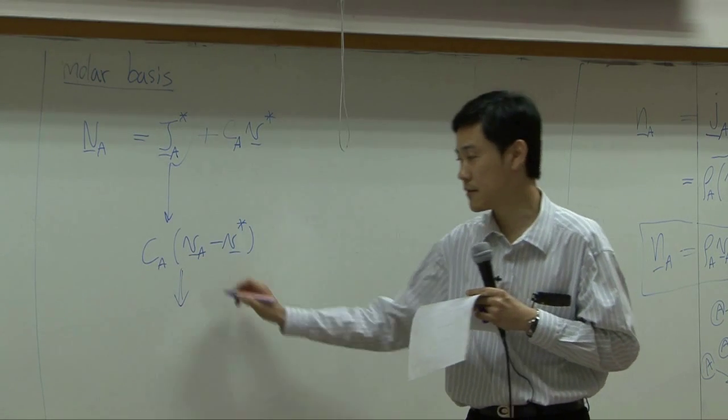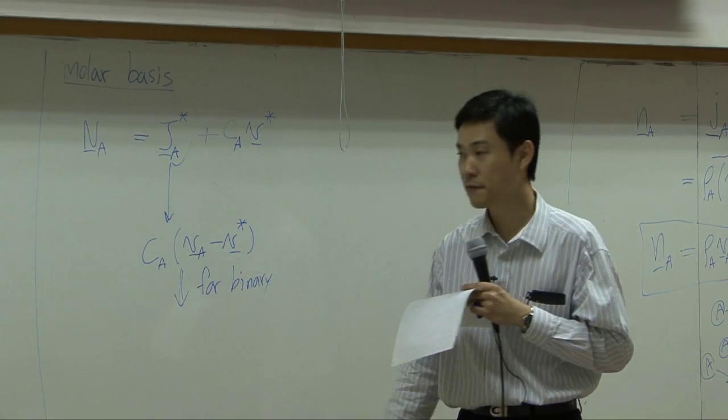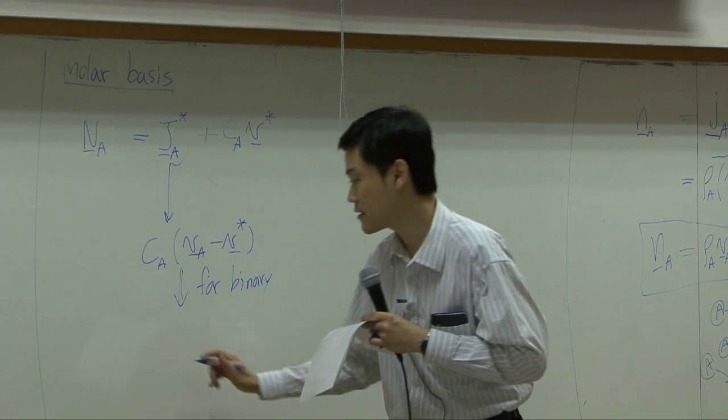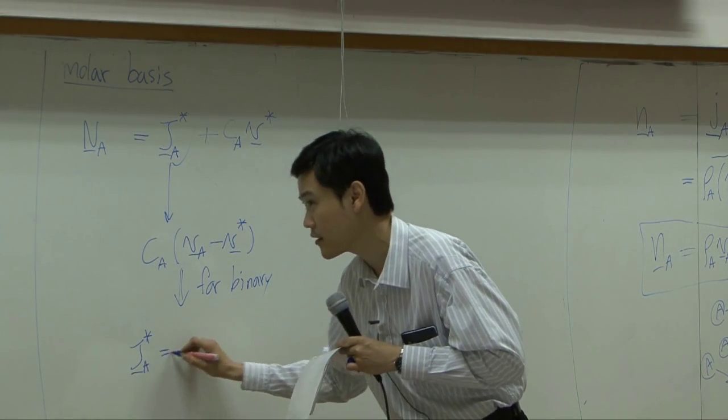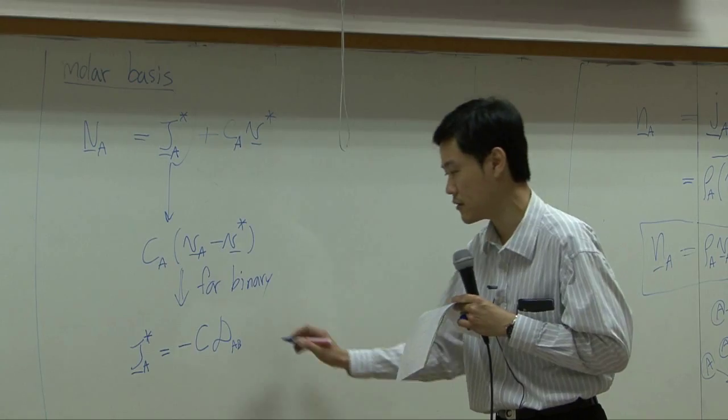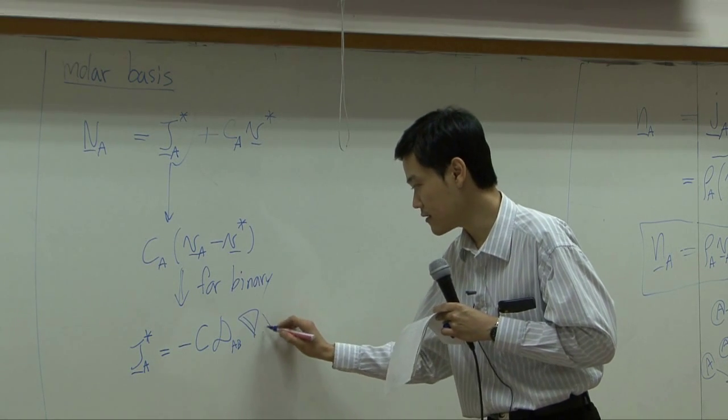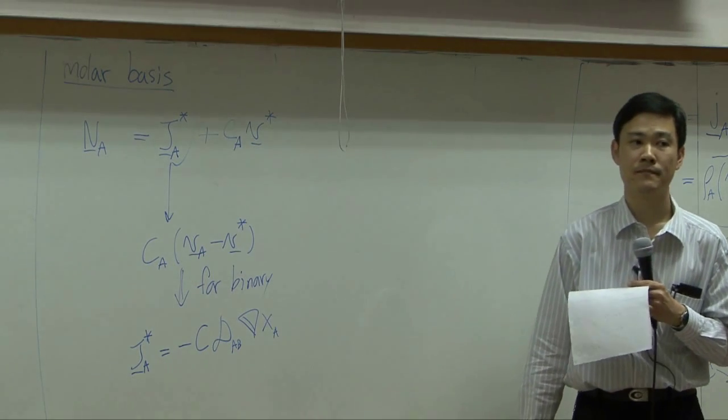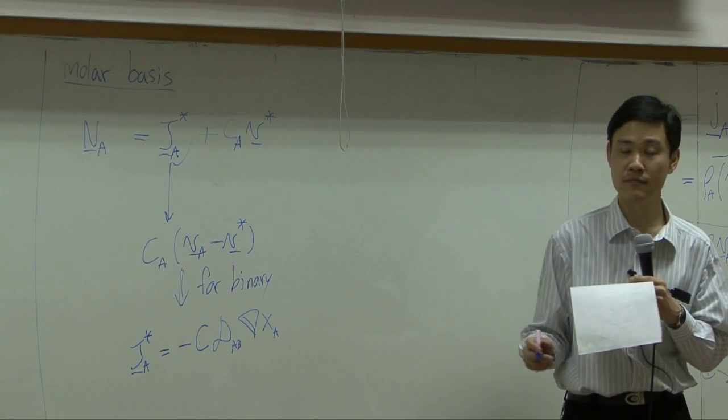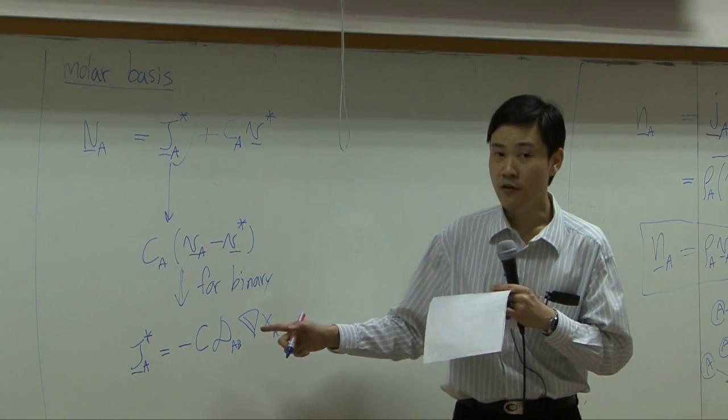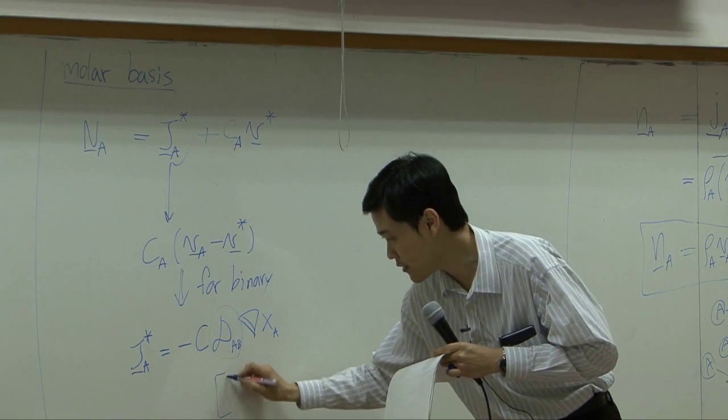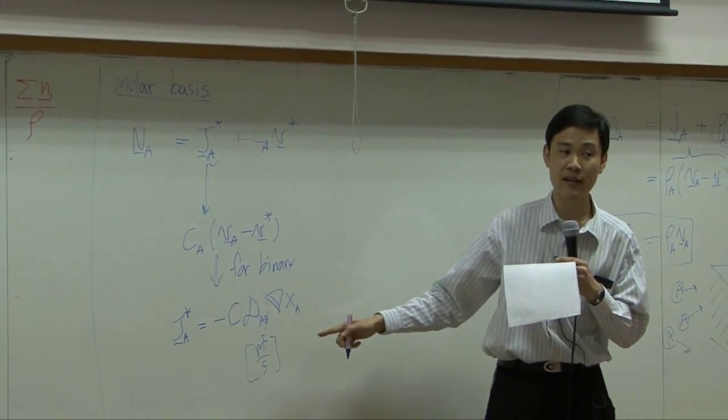Again, for binary system, you can also use Fick's law. Fick's law can also be developed for molar basis. For molar basis, Fick's law can be written as JA star equal to minus total concentration in mole, times diffusivity or diffusion coefficient, and gradient of mole fraction. The terms are the same, just represented in basis of mole instead of mass. And diffusion coefficient DAB in that board and in this board would be the same. Because by itself, it has unit of meter square per second. It has nothing to do with either mole or mass.